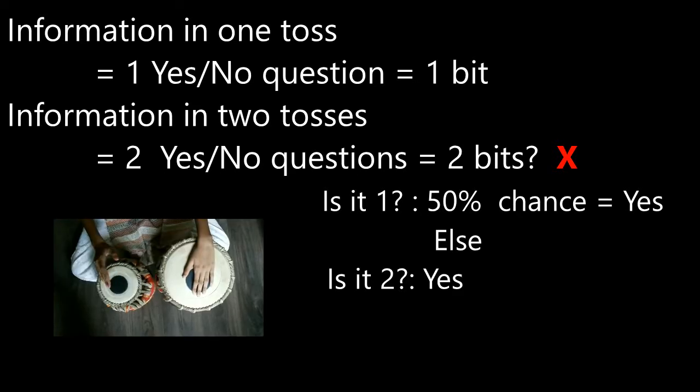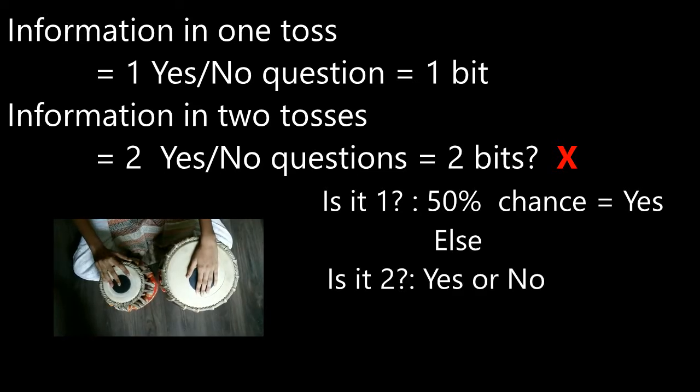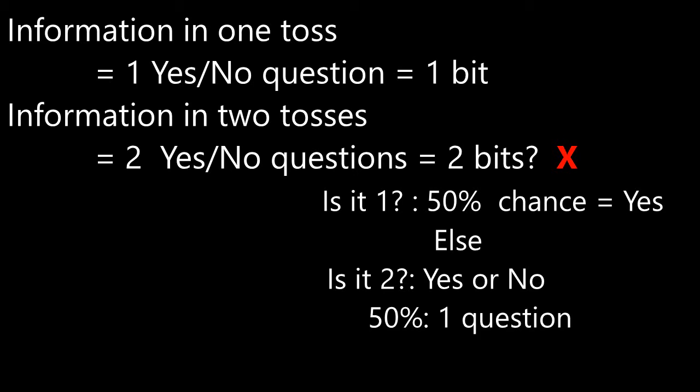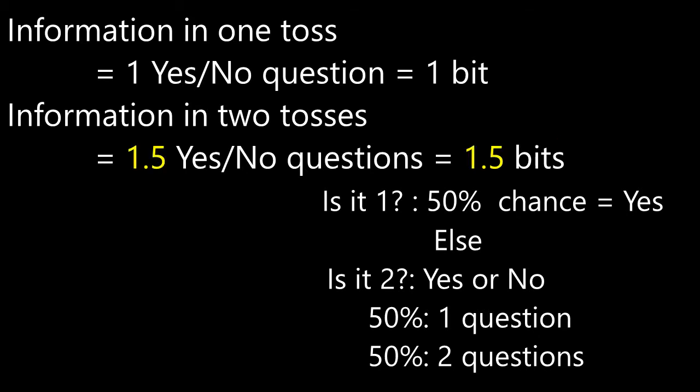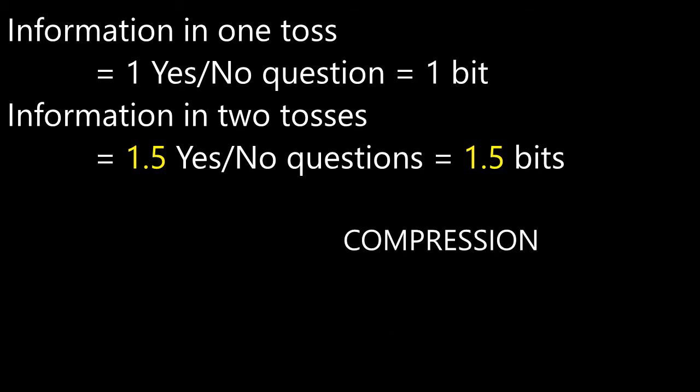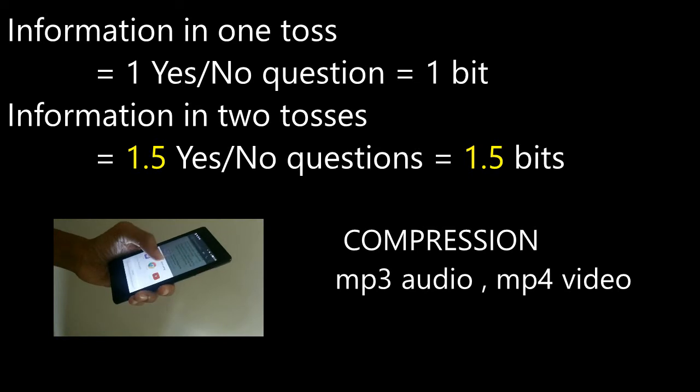Half the time, you can get away with just one question. And half the time, you need 2 questions. So on average, you need to ask only 1.5 questions. By questioning based on the probability of outcomes, we compress your information. This enables music and videos on our phones.